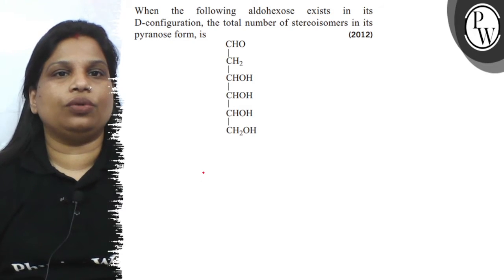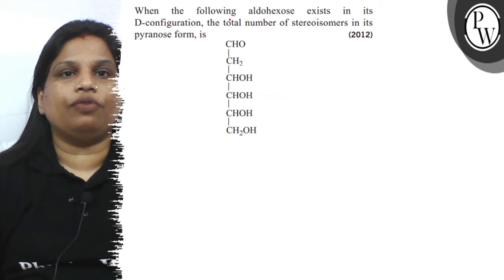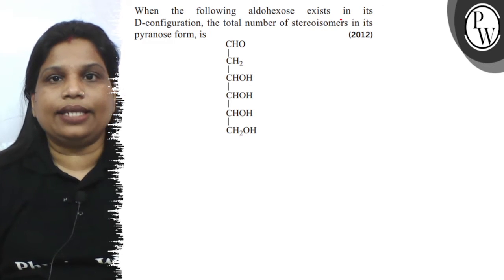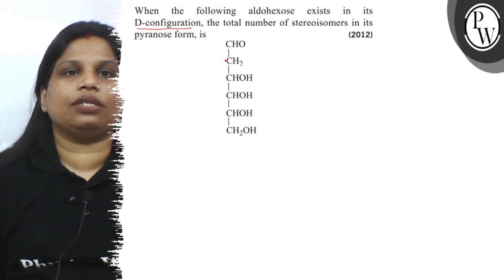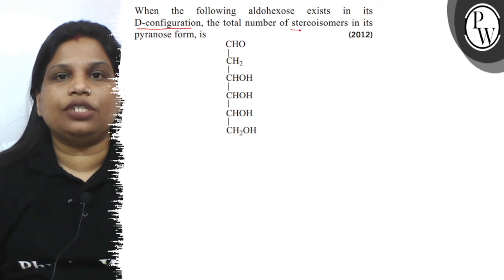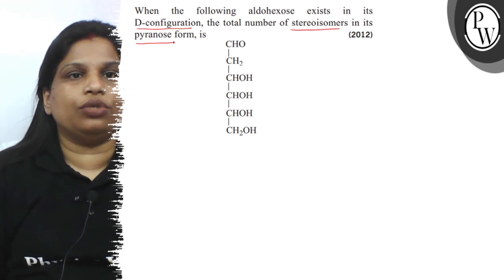Hello, let's read the question. The question says, when the following aldohexose exists in its D configuration, the total number of stereoisomers in its pyranose form.